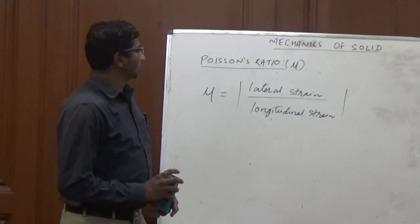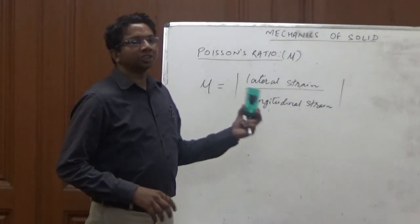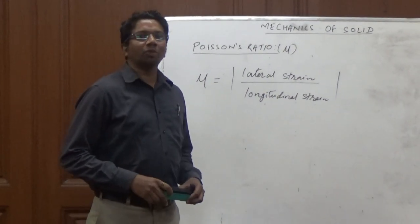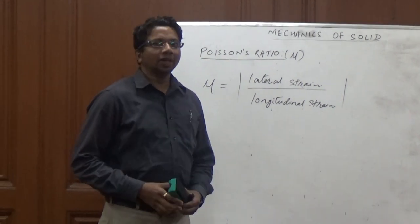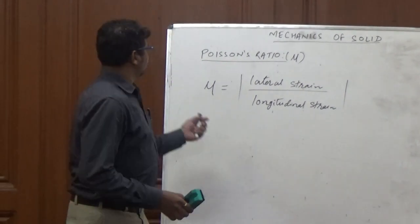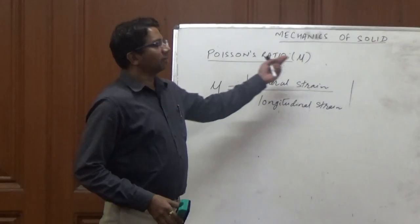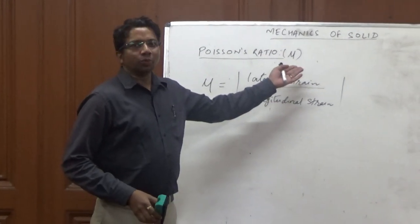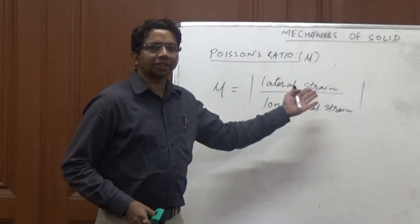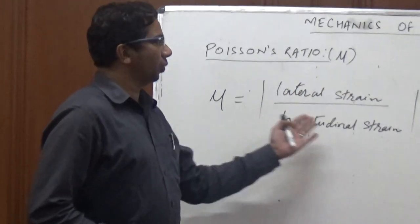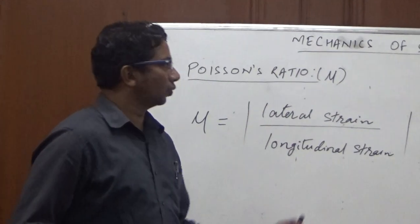Hello. I will discuss the Poisson's ratio — it is a very important topic in the mechanics of solids. It is represented by the symbol mu and it is the ratio of the lateral strain upon the longitudinal strain.